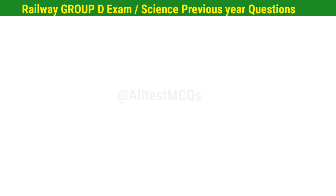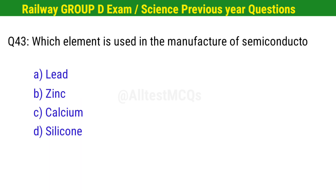Question No. 43. Which element is used in the manufacture of semiconductors? Right option is D. Silicon.